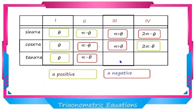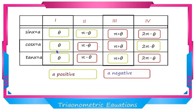To summarize: for the sin function, principal solutions are θ and π − θ when A is positive, and π + θ and 2π − θ when A is negative. For the cos function, θ and 2π − θ when A is positive, and π − θ and π + θ when A is negative. For the tan function, θ and π + θ when A is positive, and π − θ and 2π − θ when A is negative.